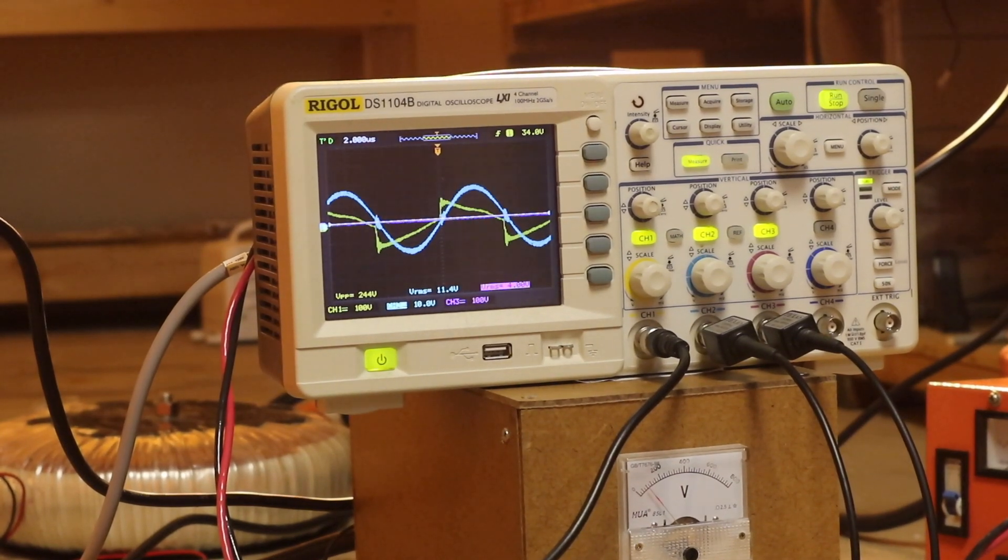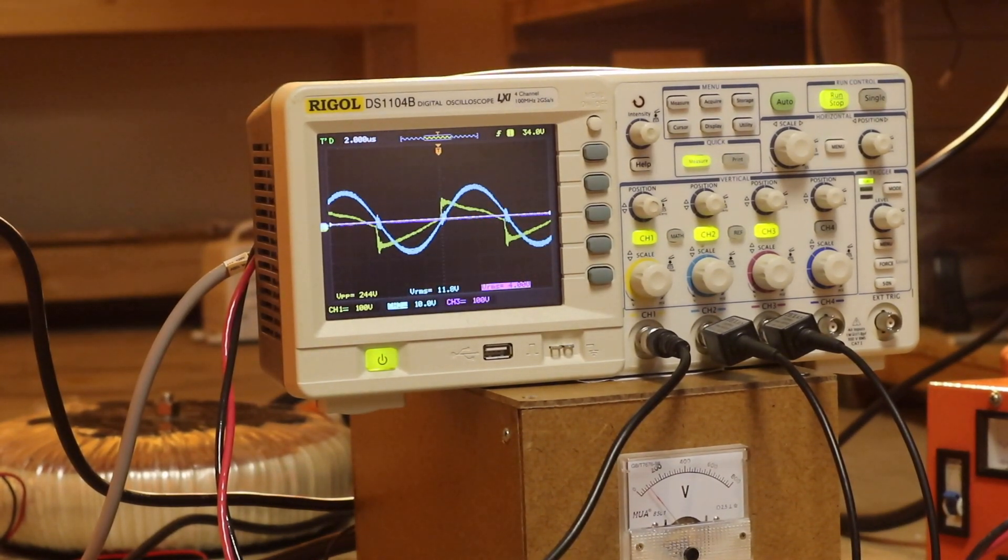So what you're looking at on the scope, the yellow is the voltage across the impedance transformer, the blue is the current going through the impedance transformer, which right now is about 11 to 12 RMS amps.